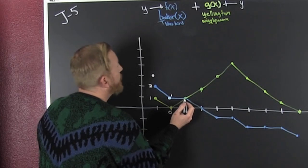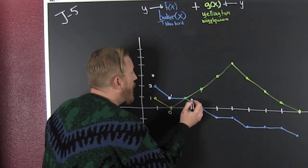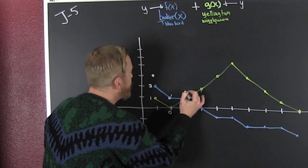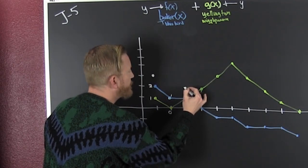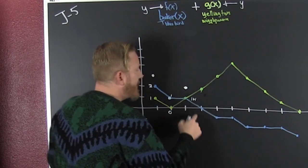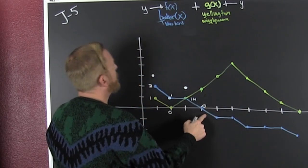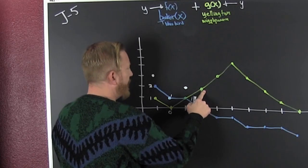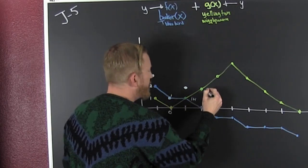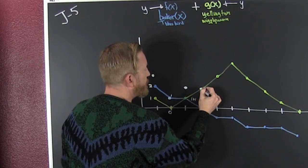Here, both Yellington and Booker T. Bluebird are 1, so that's 1 plus 1, and I put a dot here at 2. And then here, this one is 0, and then Yellington is 2.